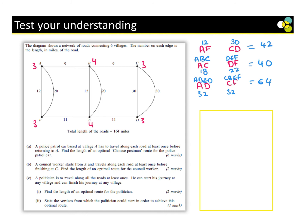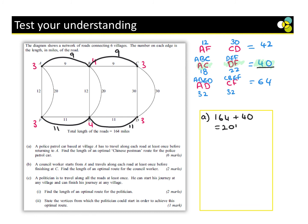We add extra arcs for A–C (weight 9) and D–F (weight 11 each way). The total length is 164 plus 40, which is 204 miles. Part B: a council worker starts from A and finishes at C — since they start and finish at different places, we need exactly one pair of odd nodes. A and C must be odd, so we keep the D–F repetition of weight 22, giving 164 plus 22 = 186 miles.